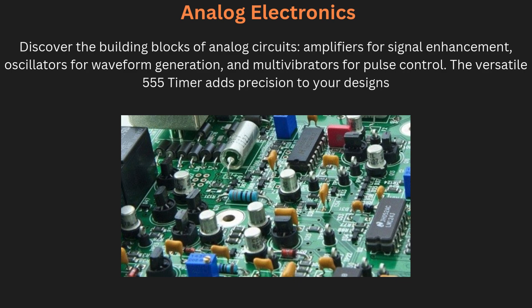First, Analog Electronics. Unit 1 focuses on the building blocks of analog electronics. Amplifiers like Class A, B, AB, and C are introduced with a focus on their power efficiency and application. Class A provides high fidelity but low efficiency, while Class B and AB balance efficiency and distortion.